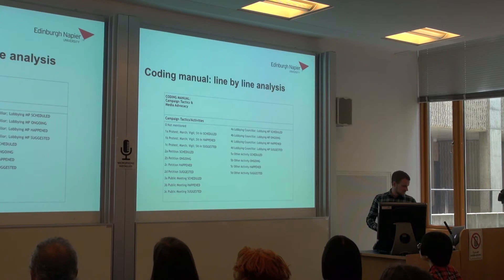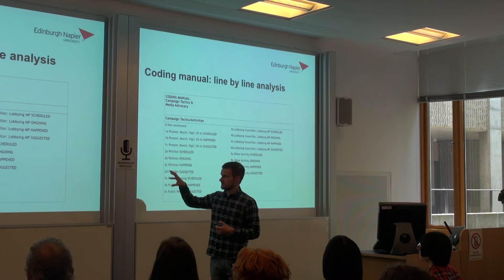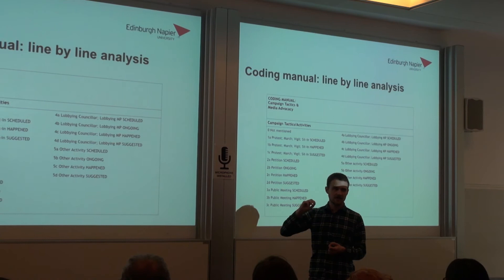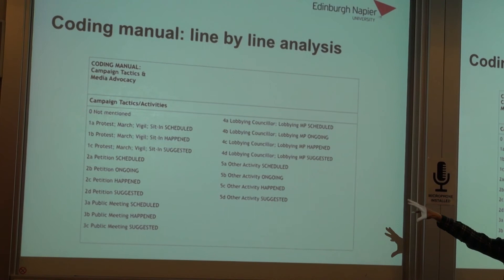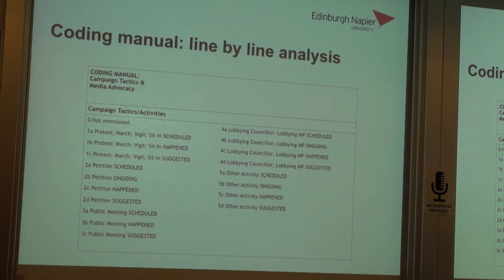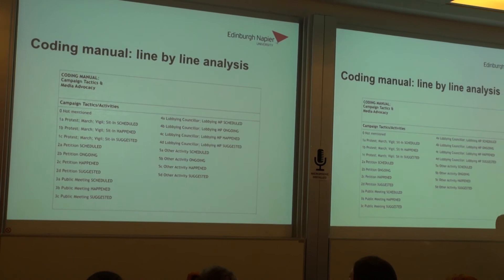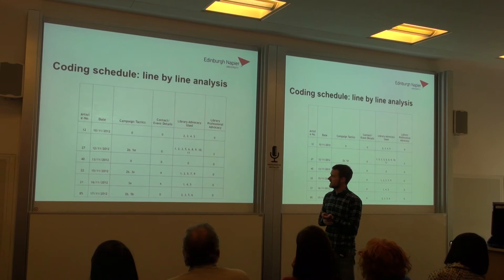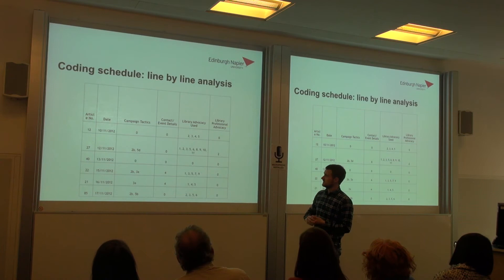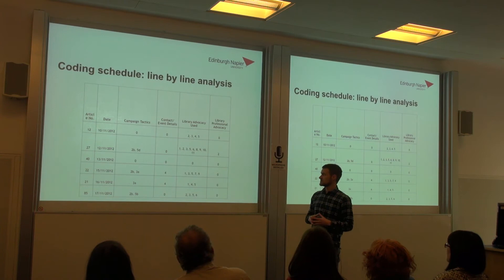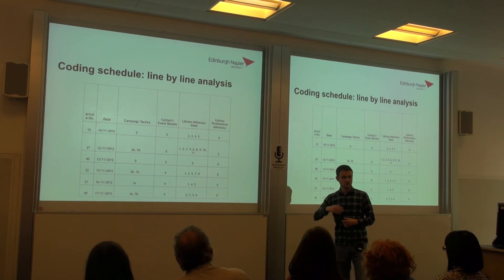The coding manual I used to address the third aim included predetermined categories such as campaign tactics and activities. Going through each article line by line, I highlighted cases where activities were mentioned — whether scheduled, already happened, or merely suggested — and everything was attributed codes. For example, one article had no mention of campaign tactics but had library advocacy codes 2, 3, 4, and 5, each matching a different form of advocacy, such as the value of internet access in libraries for job seekers.